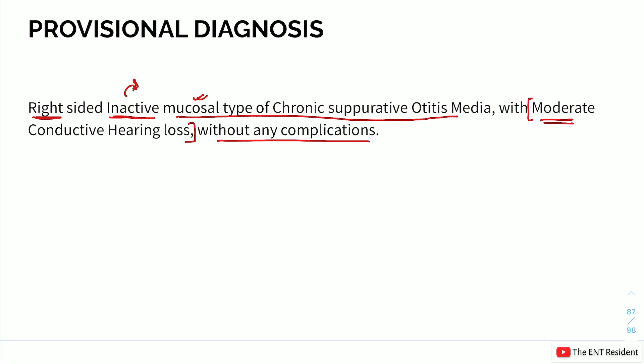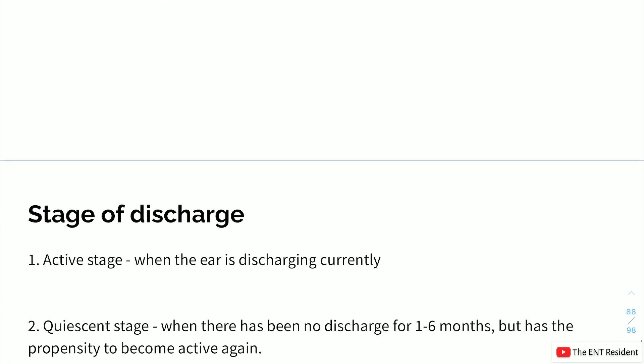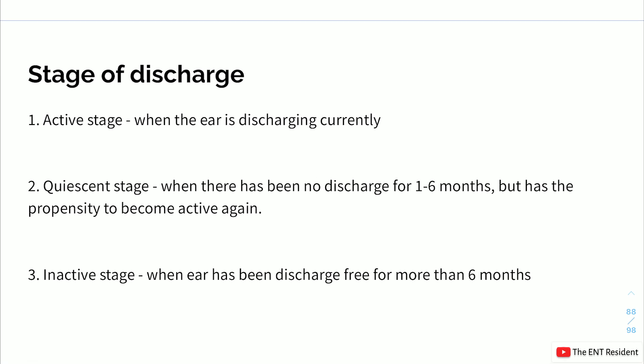Staging of CSOM discharge: active (currently discharging), quiescent (no discharge for 1-6 months but ear has propensity to become active again), and inactive (discharge-free for more than 6 months). In this case the ear has been discharge-free for more than six months, hence the designation 'inactive.'